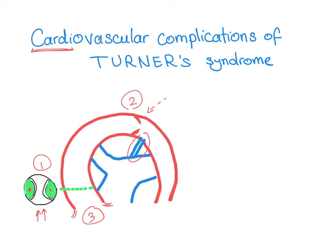So to summarize the cardiac complications: bicuspid aortic valve, pre-ductal coarctation of the aorta, and aortic root dilatation with possible dissection — in that order as number one, two, and three.